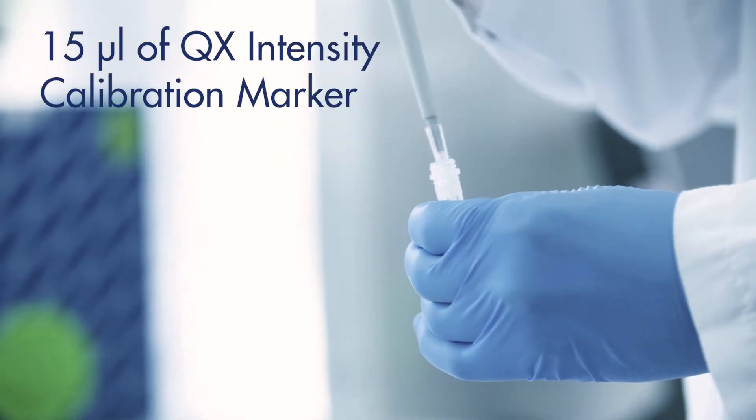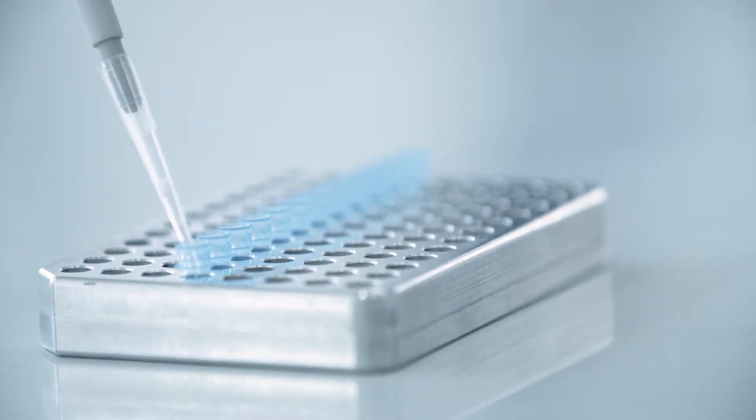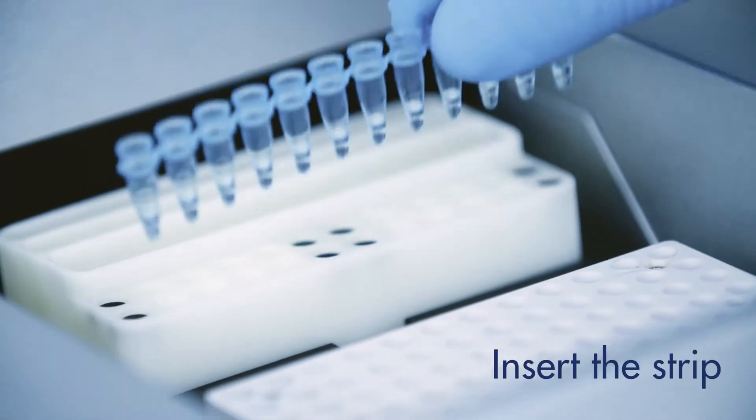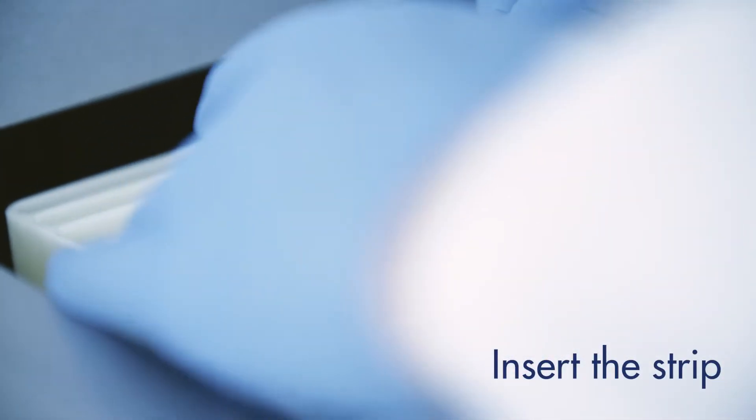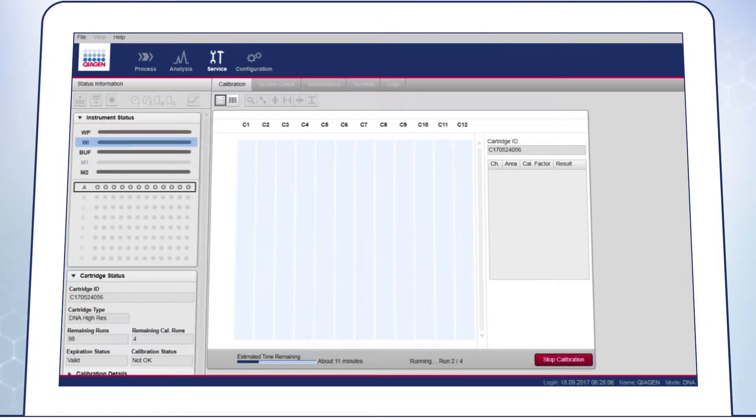Load 15 µl of QX Intensity Calibration Marker into a 0.2 ml 12-tube strip. Add a drop of mineral oil and insert the strip into the Marker 2 position of the buffer tray. To launch the calibration run, go to the Service Environment of the QIAXcel ScreenGel software. Go to the Calibration screen and click on Start Calibration.